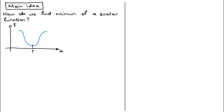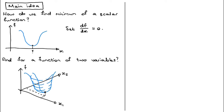If we have a scalar function that takes in a variable x and produces some output, how do we find its minimum? We normally take the derivative of the function with respect to x and set that equal to zero. What if we have a function dependent on two variables, say x1 and x2? We set the partial derivative of f with respect to x1 equal to zero, and then the partial derivative with respect to x2 equal to zero, and solve these two equations jointly to find the minimum. Could we combine x1 and x2 into one variable and calculate the partial derivative of f with respect to a vector x?